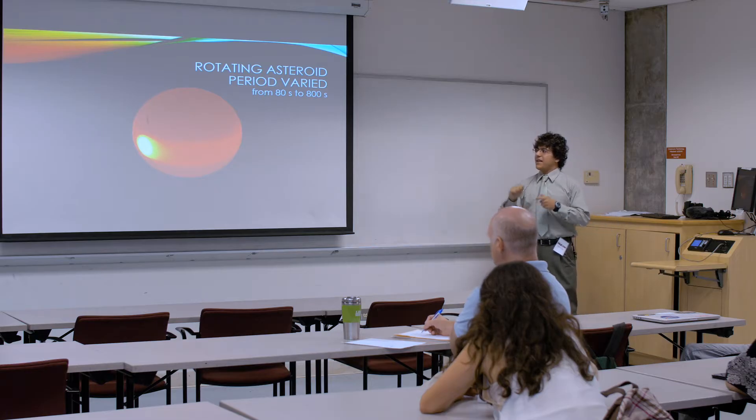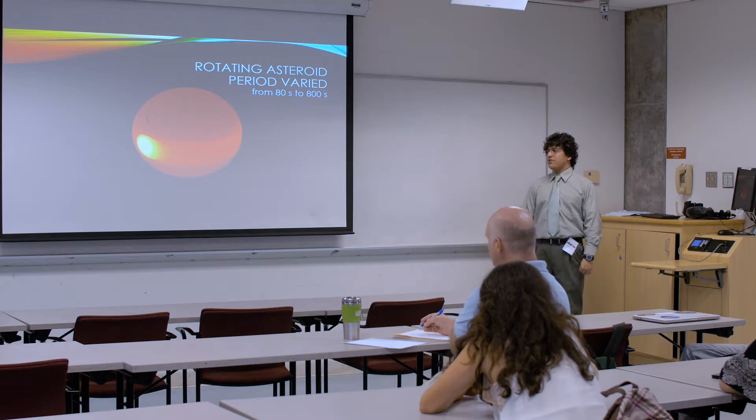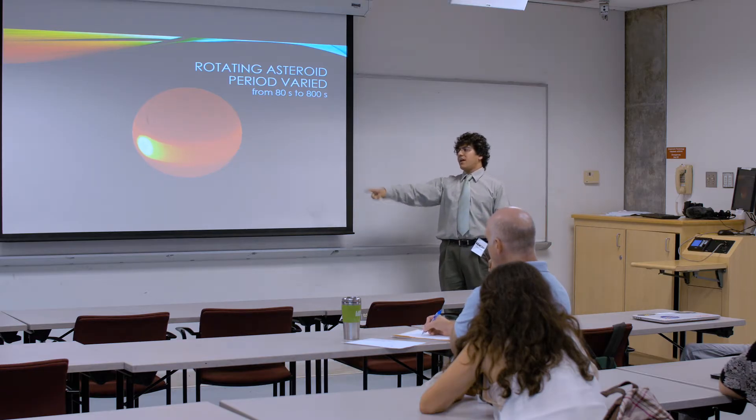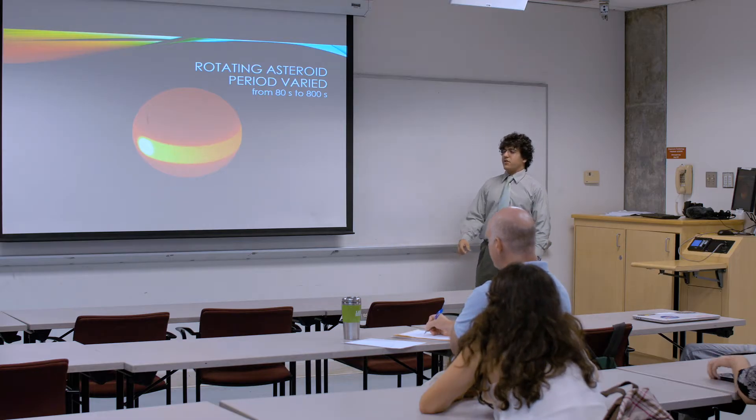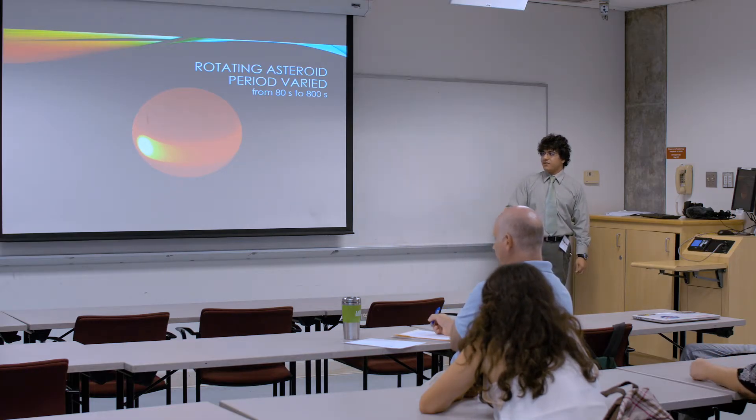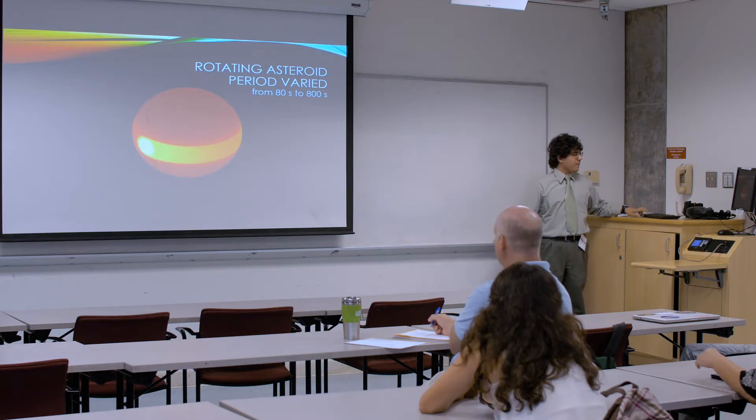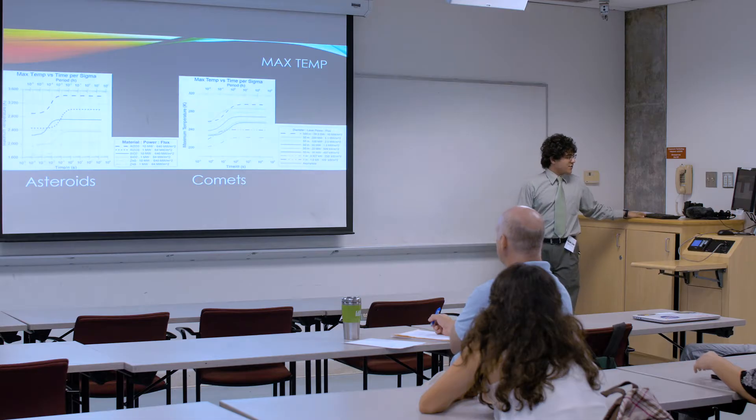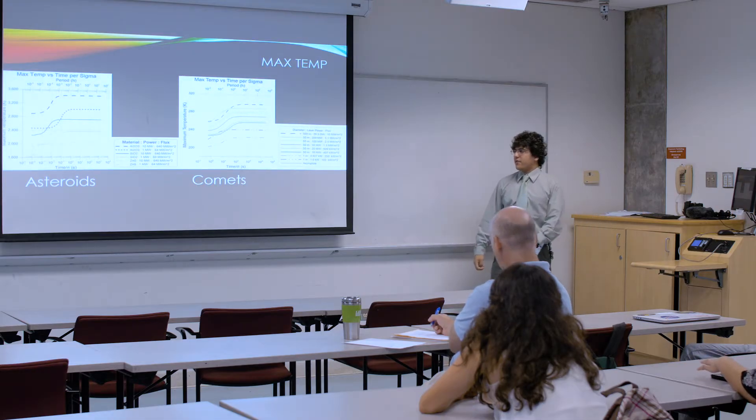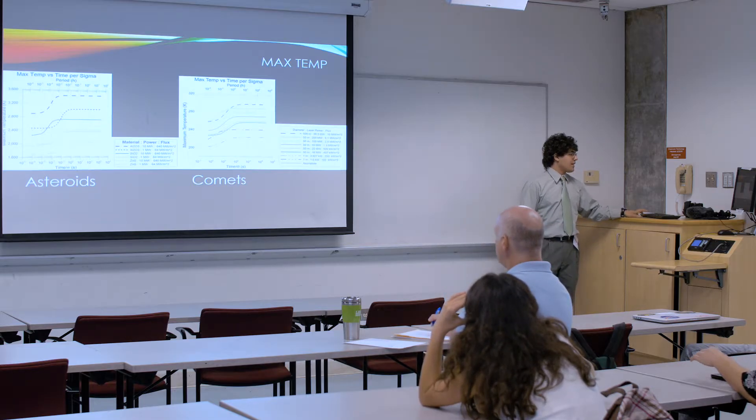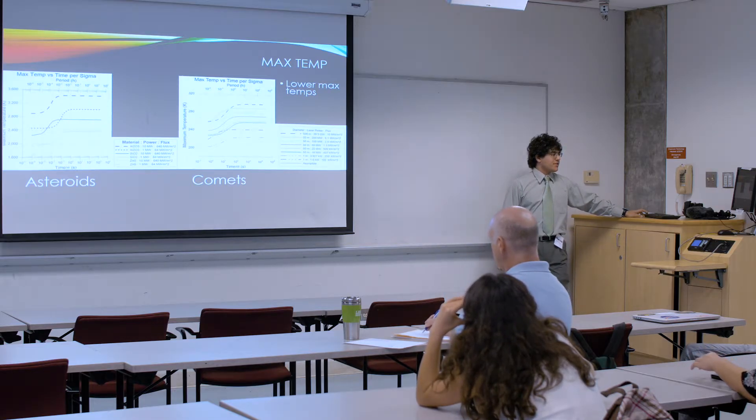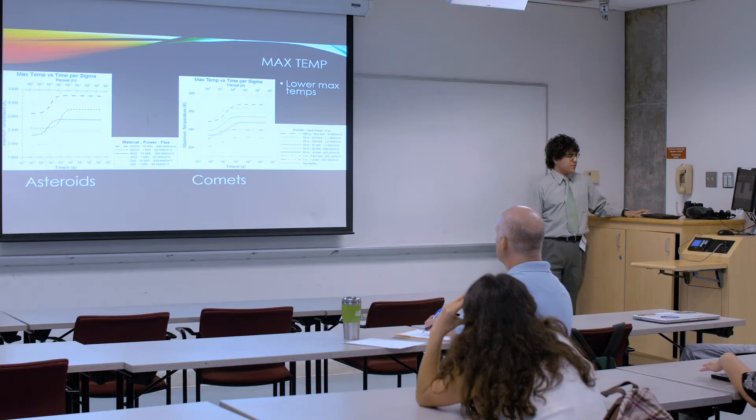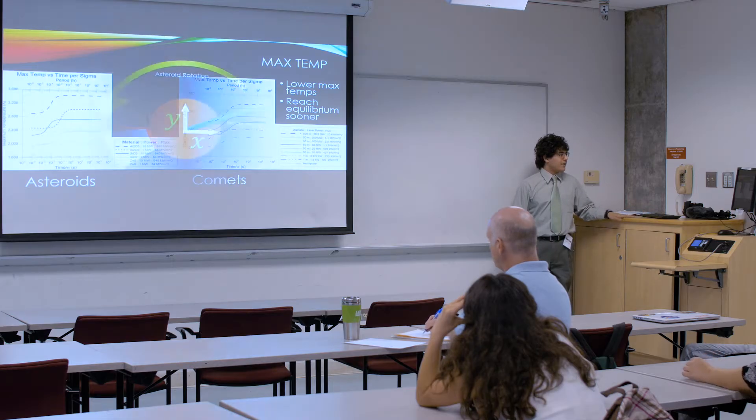Here's another graph. This one has the asteroid period varied. This is actually multiple different cases. What you'll see is that the faster asteroids have a lot of smearing versus the stationary ones where it looks like just a single spot because there's no smearing occurring. Here, this is plotting max temperature for asteroids versus comets. Again, for a variety of different asteroid compositions and laser powers. You'll notice that the comets don't reach as high temperatures, and they reach those temperatures sooner. That was an interesting find.